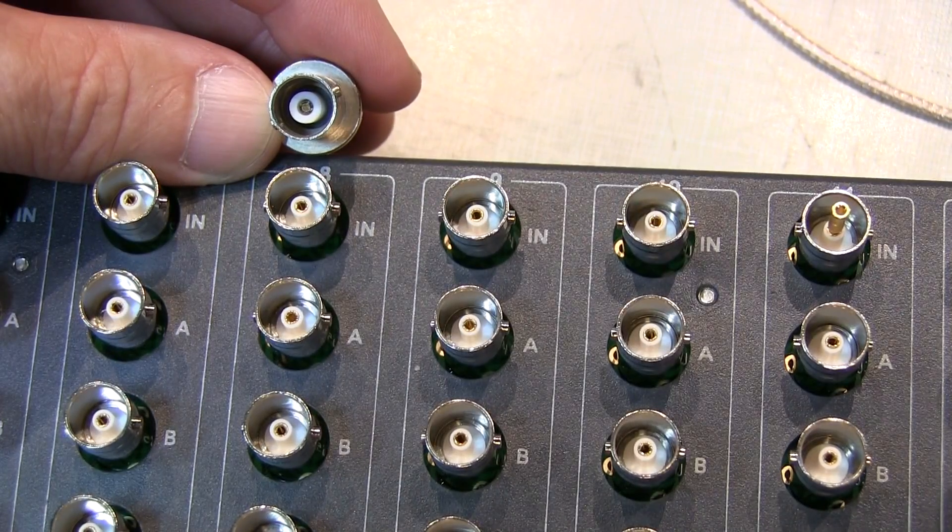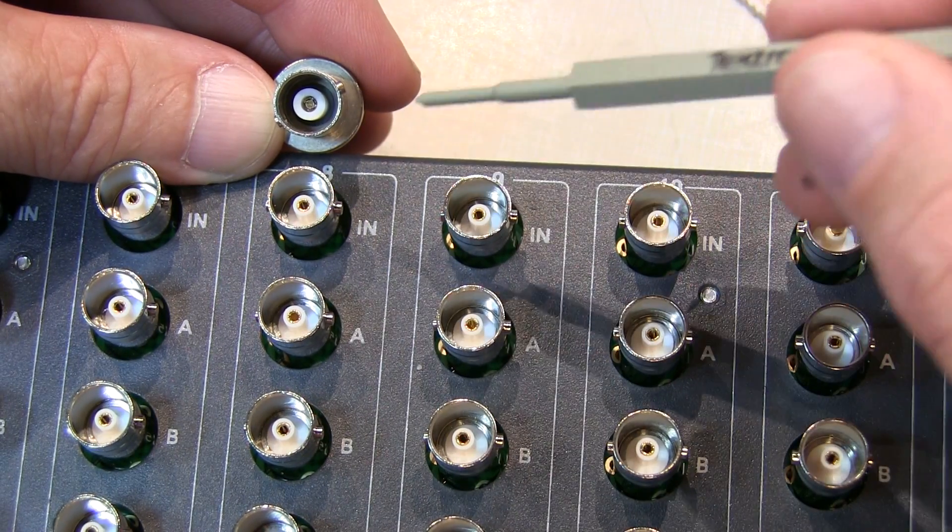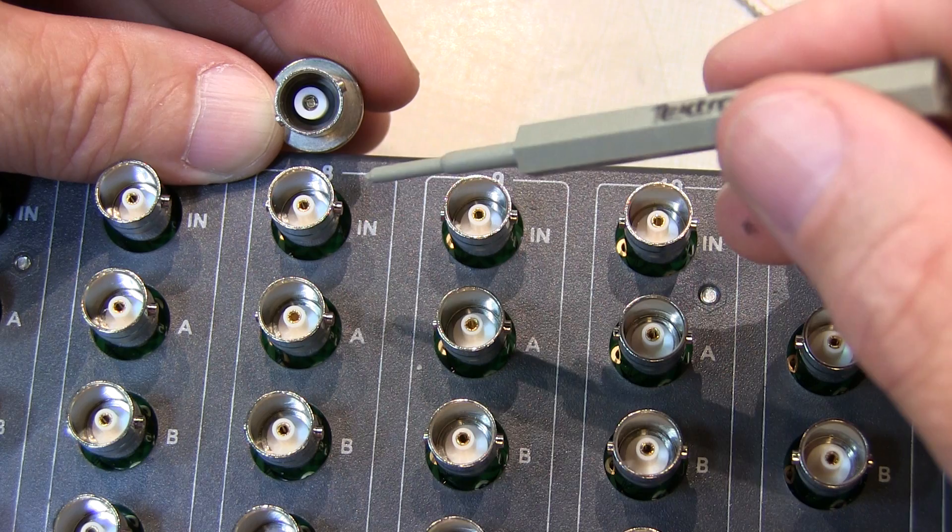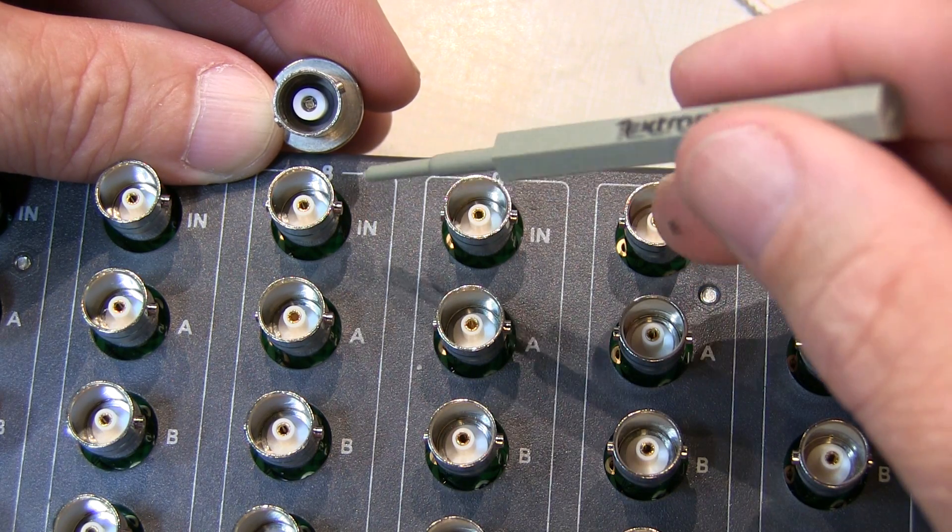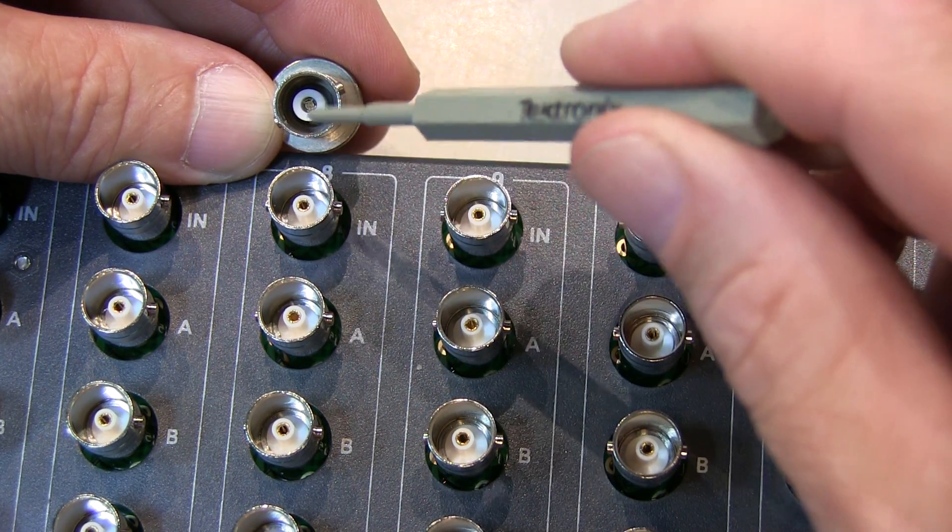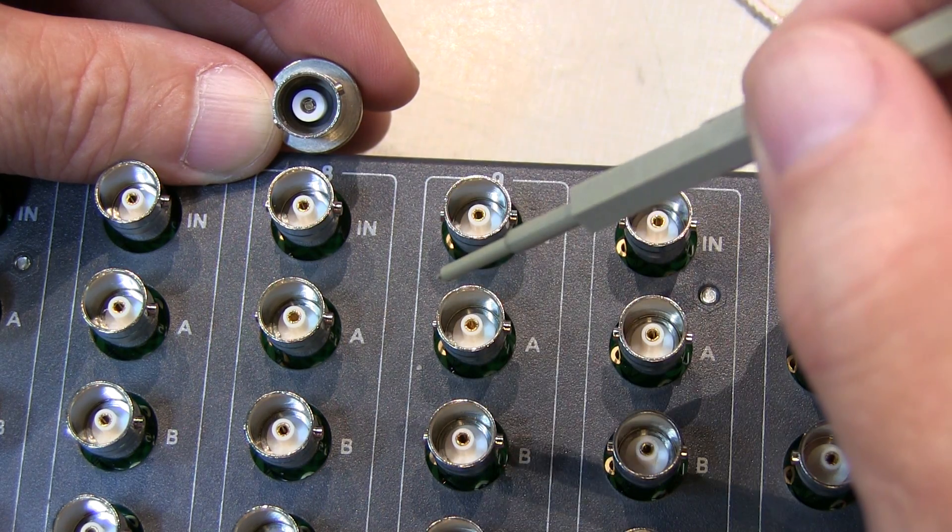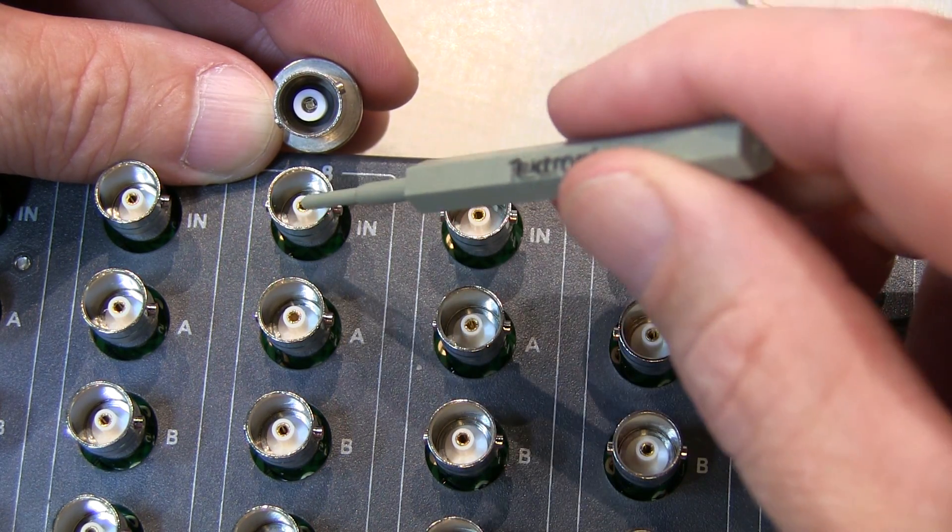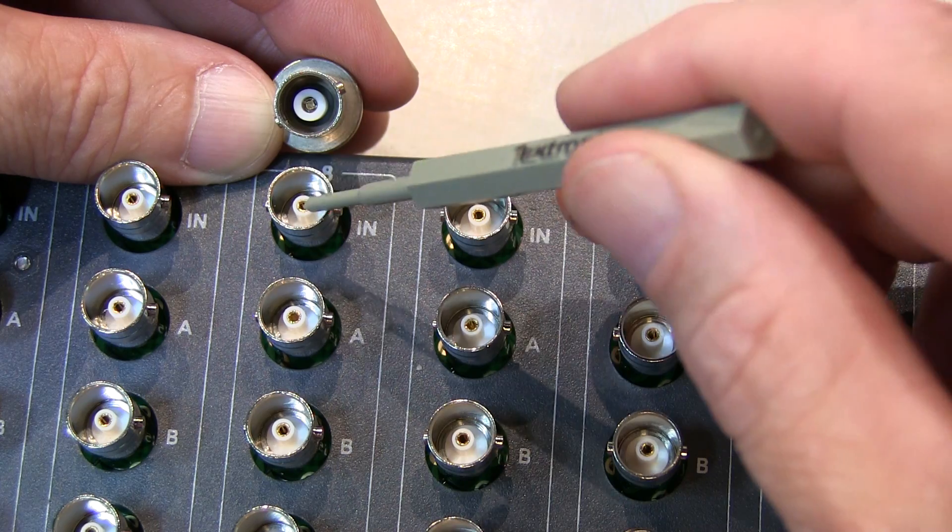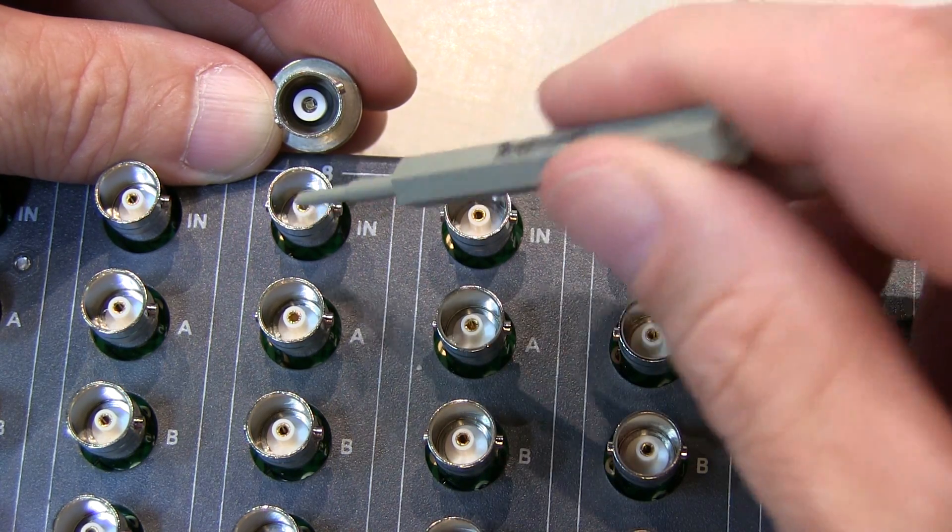There's a very common misconception that intermating a 50 ohm plug with a 75 ohm receptacle, or vice versa, can either cause damage to the center female connector, or can cause intermittent contact between the center conductor on the plug and the receptacle.